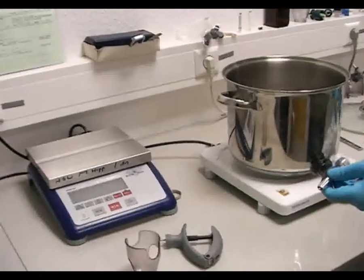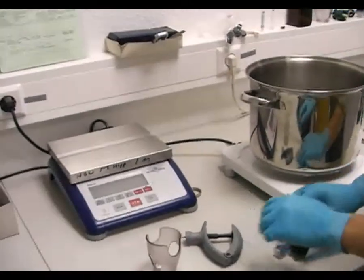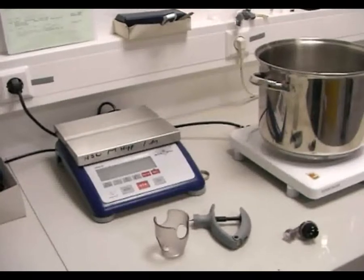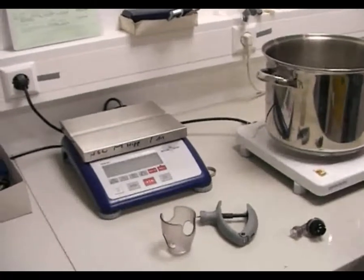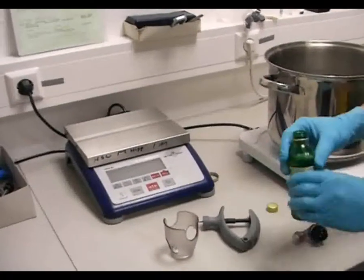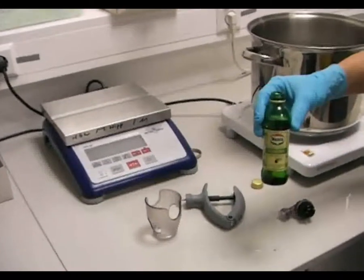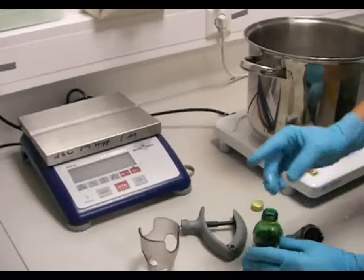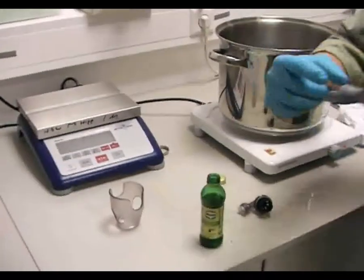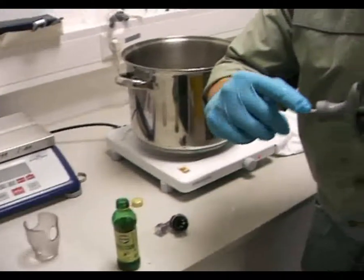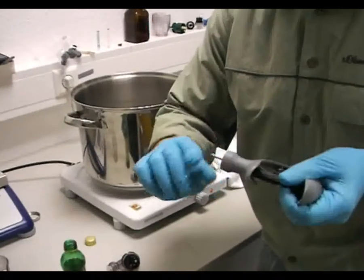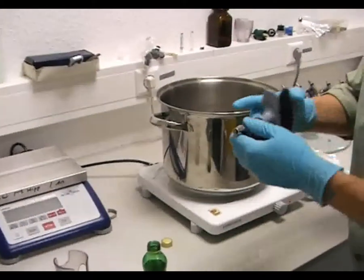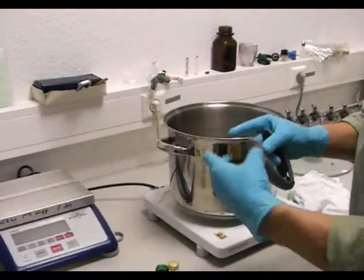Nun empfehlen wir den O-Ring auf der Kolbenstange mittels Wattestäbchen oder Q-Tip mit kaltgepresstem, hundertprozentigem Olivenöl oder ähnlichem leicht einzureiben, um ein leichtes Laufen nach der nächsten Anwendung zu ermöglichen. Weitere Teile müssen nicht eingeschmiert oder gefettet werden.